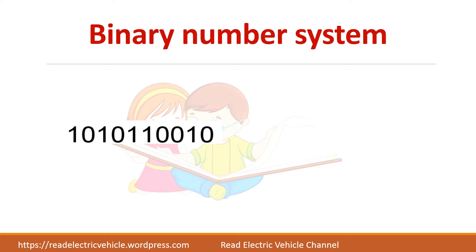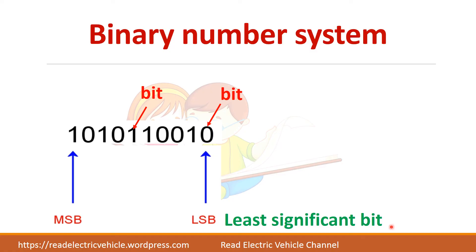In a binary number which includes 1s and 0s, each digit is called a bit. This number as a whole represents some decimal number. The last bit on the right is called the least significant bit, and the leftmost bit is called the most significant bit, because the most significant bit has more value compared to the least significant bit. If you change the least significant bit from 0 to 1, there will not be much difference in the decimal value, whereas if you change the most significant bit, it will have a huge difference.